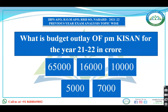What is the budget outlay of PM Kisan for the year 2021-22 — 65,000, 16,000, 10,000, 5,000, or 7,000 crore? The budget outlay for PM Kisan for 2021-22 is 65,000 crore rupees. For crop insurance it is 16,000 crore.